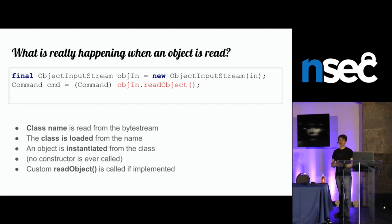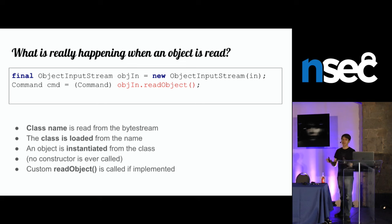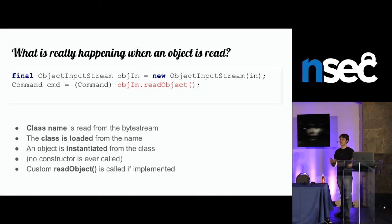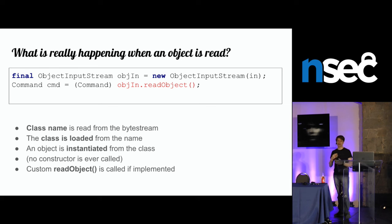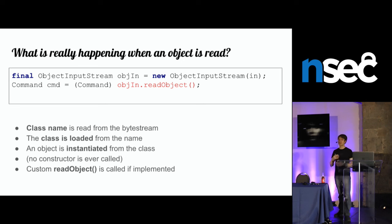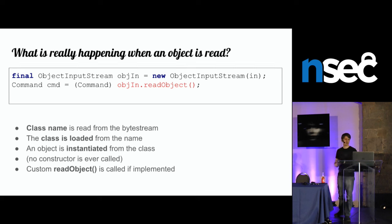Looking at a Java deserialization code example: if the server receives a payload, it will call readObject to deserialize. Internally, in the byte stream, it will find the class name, load the class if not already loaded, and instantiate it. No constructor is called by default — it's only if readObject methods are implemented that they will be called. The common cast we see does not happen prior to those steps, so the execution of the readObject method happens even if the object is not the expected type. A ClassCastException will be triggered, but this does not stop an attacker from sending any type available in the application.